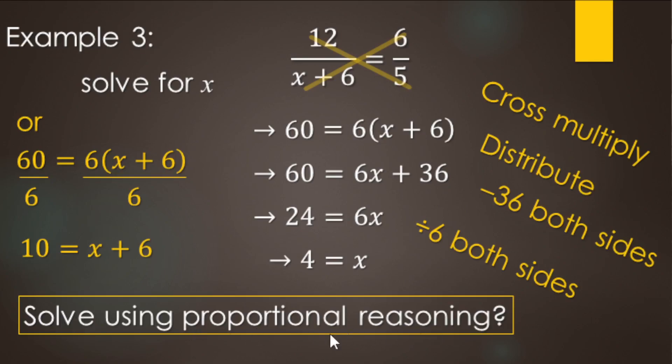Now again, we can still use proportional reasoning on these ones here. So if we look, we're trying to find this x here. So 6 times what makes 12? Well, 6 times 2 makes 12. So 5 times 2 is going to equal x plus 6. Well, 5 times 2 is 10. And that's going to equal x plus 6. Well, that brings us right down to this spot here. 5 times 2 is 10. And that's going to equal x plus 6. Because 6 times 2 makes 12. So we can still use proportional reasoning at least to get to this step here.